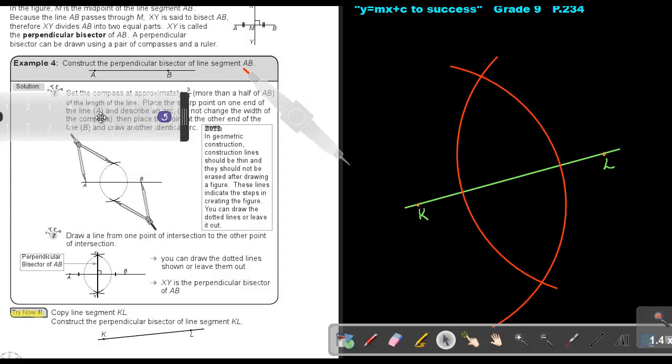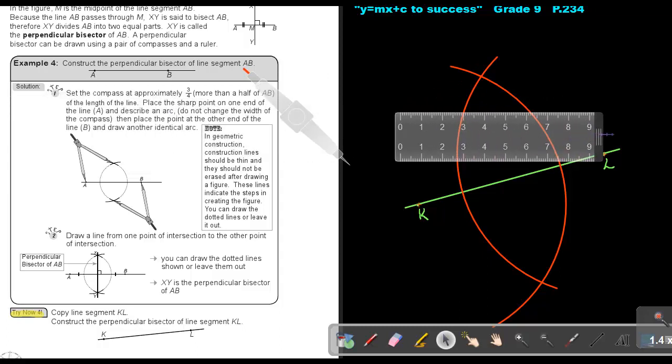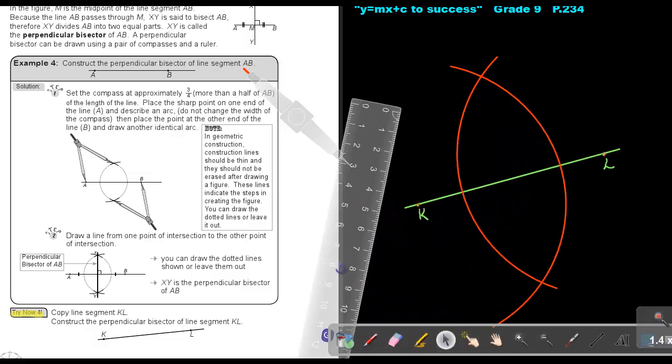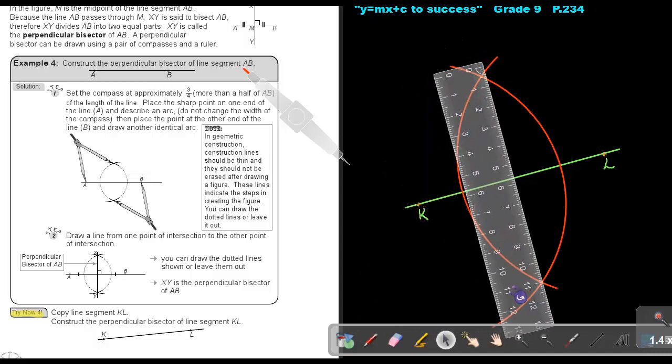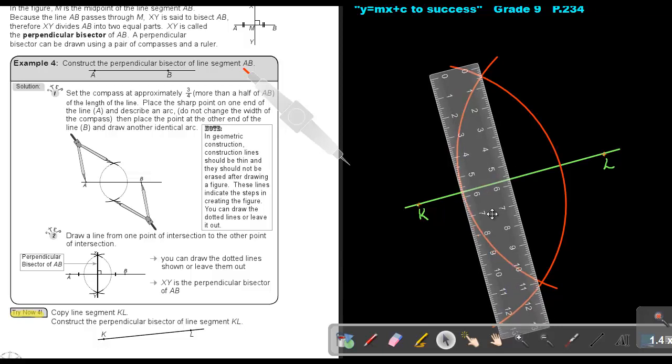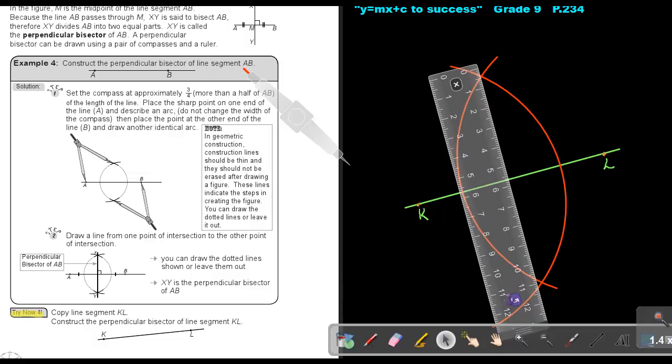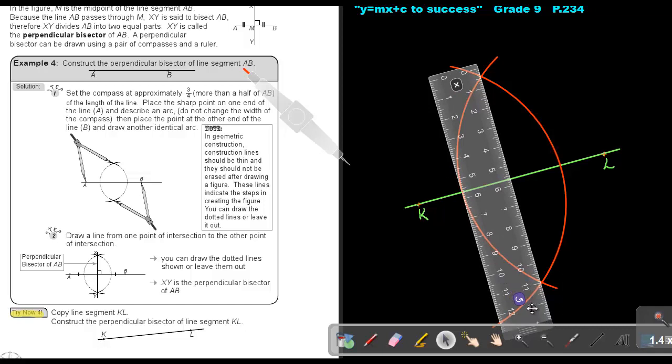Now I'm going to use my ruler and make it a little bit longer. I'm going to move it exactly on that point of intersection and on this point of intersection. It's there and it's there. Then I can just take my pencil and draw that. Just make sure it's a straight line and connect that point of intersection.